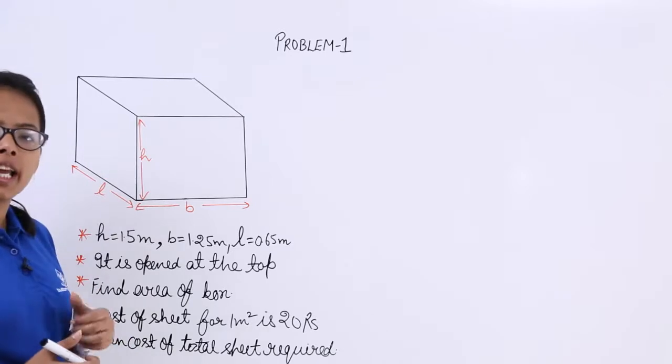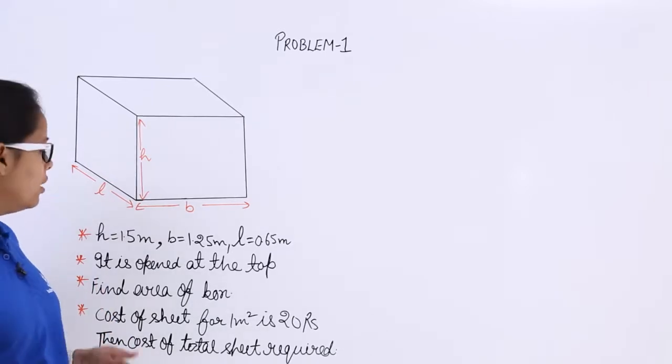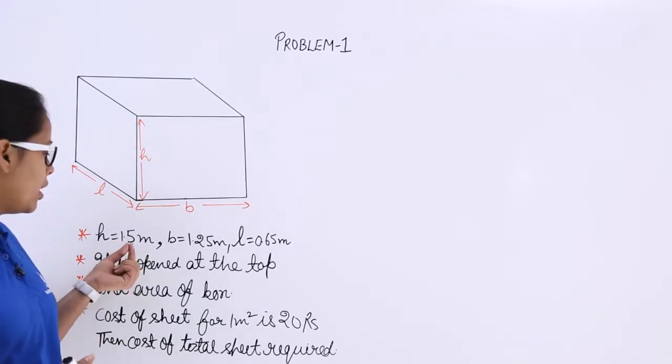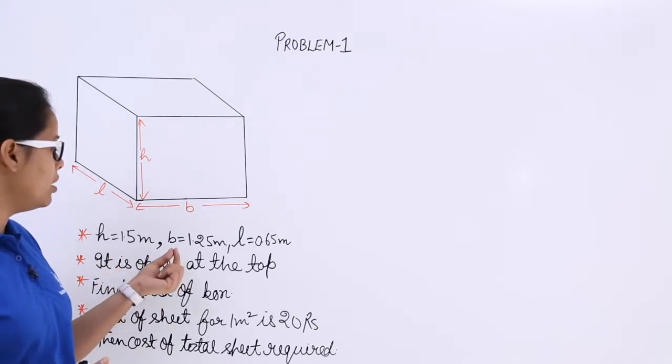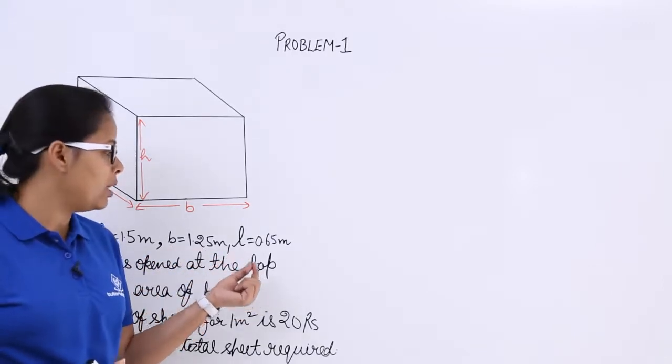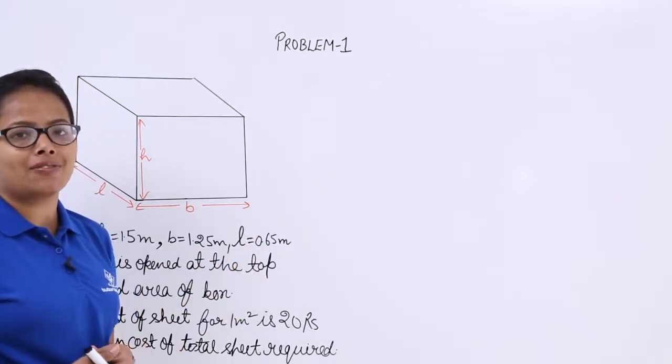You can see in this problem again I have drawn a cuboid here where H has been given to you. It is 1.5 meter, B is 1.25 meter and L is 0.65 meter.